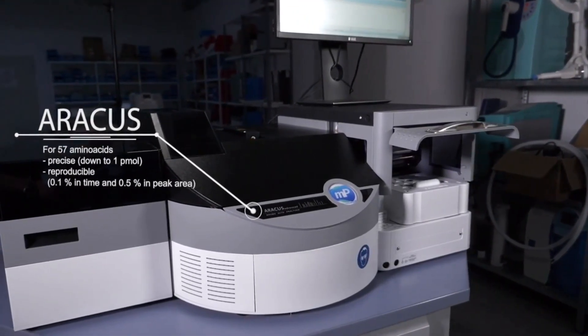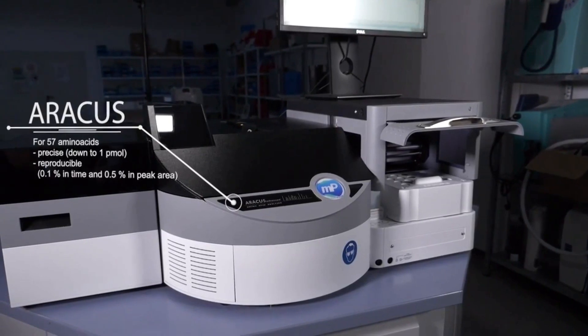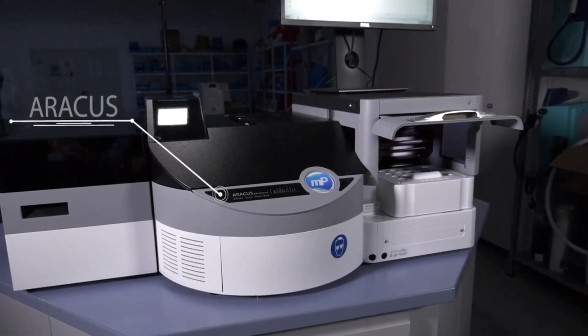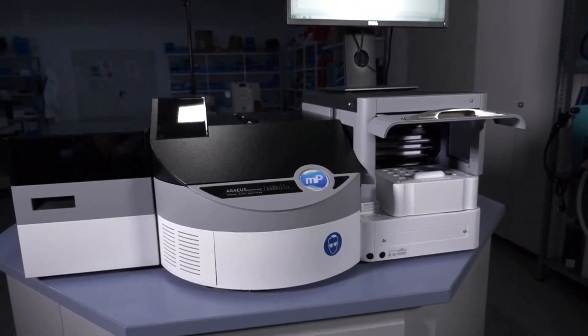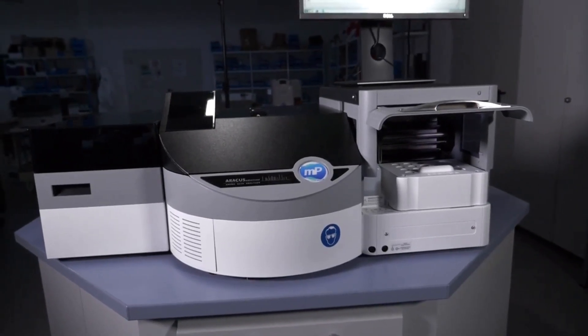You can get up to 57 amino acids with an RSD of 0.1% and as low as 1 picomole with the new photometers, which have an 8-year life guarantee.